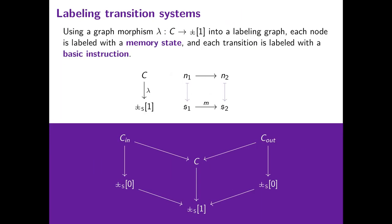Since we are considering an imperative language, we want to label each node N of the transition system with a memory state S, and we want to label each transition between two nodes N1 and N2 with a basic instruction M, which describes the action on the memory. This is achieved using lambda, a graph morphism from C, the support of the transition system, to a labeling graph which we write template S.